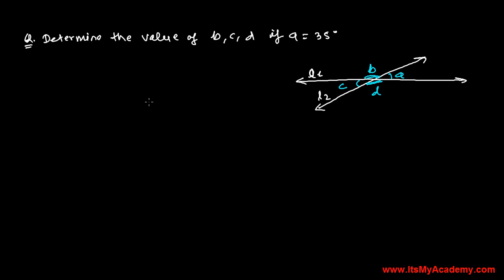Based on the concept of vertically opposite angles and linear pairs, we need to solve this question: determine the value of b, c, and d if a equals 35 degrees. This angle is given, which equals 35 degrees.